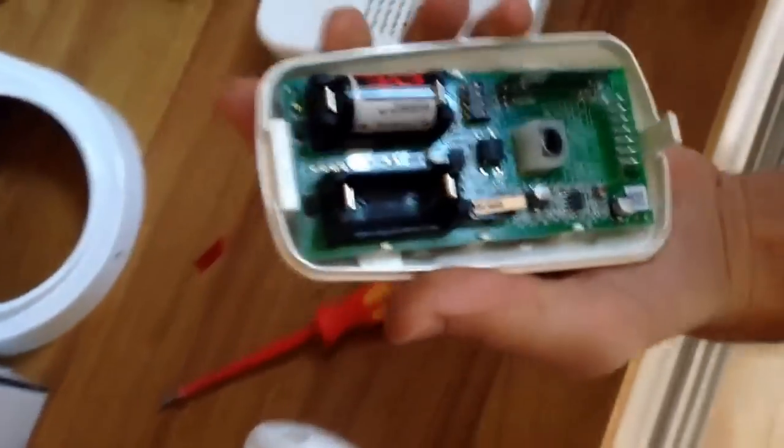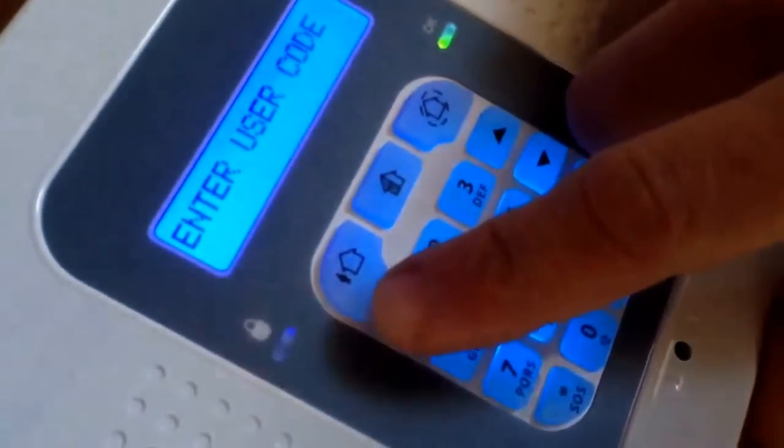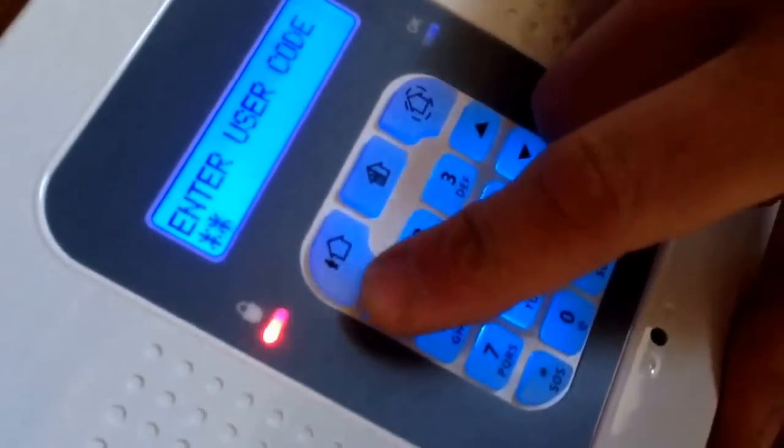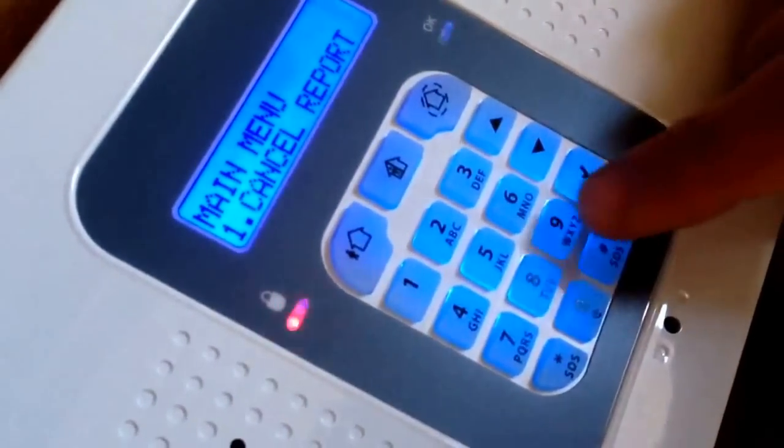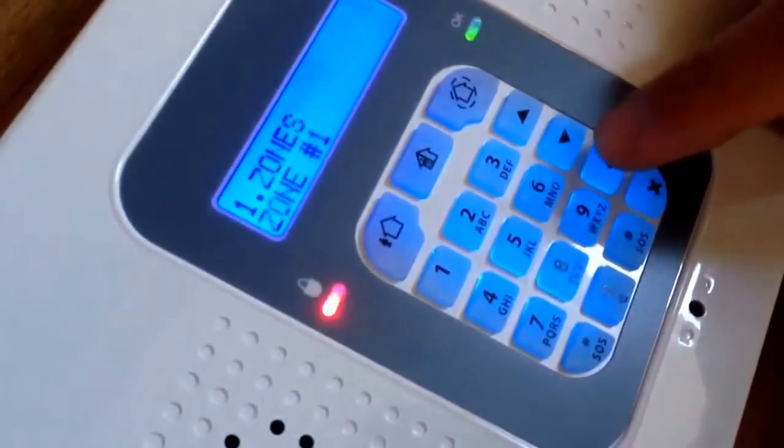You then come over to your alarm prime panel, click tick, and to get into the master user settings you click one, one, one, one, and then you want to go option nine, option one, zones.